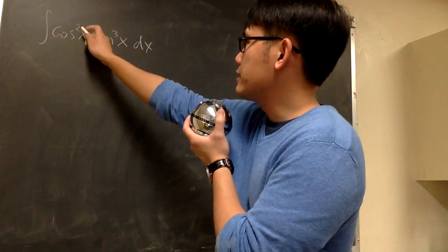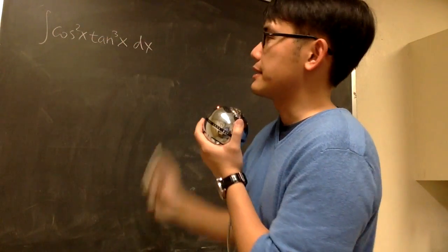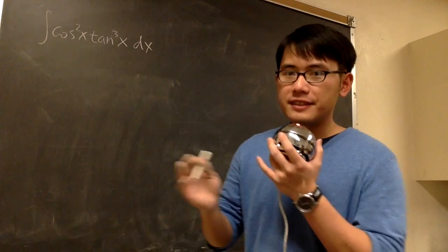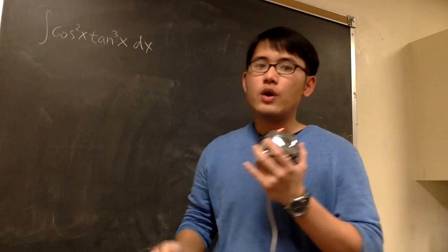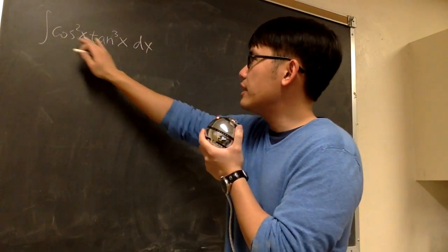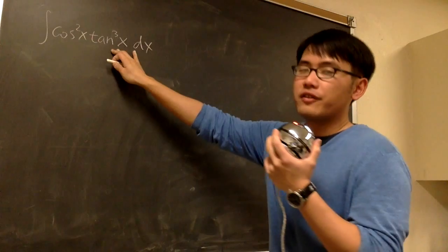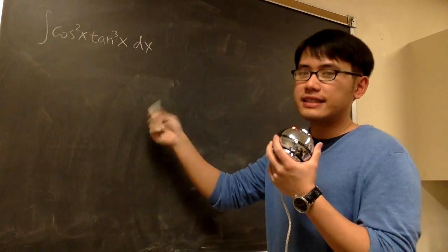Let's integrate cosine squared x times tangent to the third power x. Usually we like to have sine and cosine to work with. In this case, we have tangent here and cosine here. We can take off tangent by writing tangent as sine over cosine.